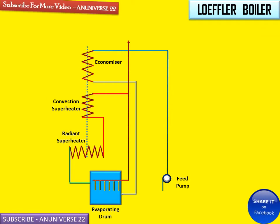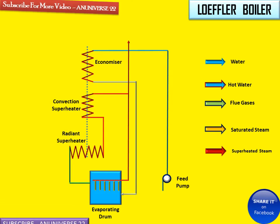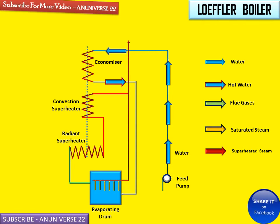This is the diagrammatic view of the Loeffler boiler. The arrows show hot water, saturated steam, and superheated steam — these different arrow types indicate different flow paths. The high pressure feed pump draws water through the economizer; this is the high pressure water supplied to the economizer, and from the economizer this hot water is delivered to the evaporating drum.